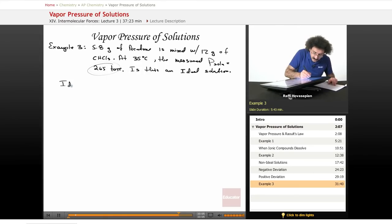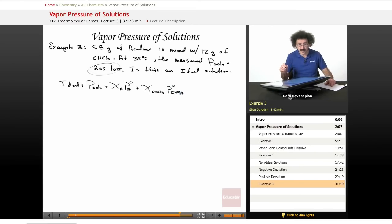our ideal solution equals the mole fraction of acetone times the normal vapor pressure of acetone, plus the mole fraction of CHCl3 times the vapor pressure of CHCl3. So let's calculate the number of moles of CHCl3.